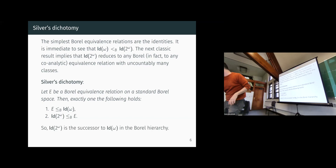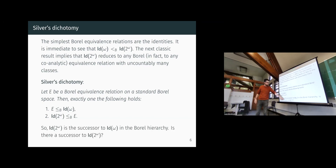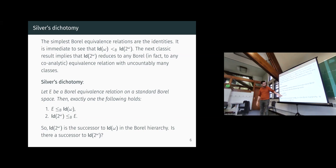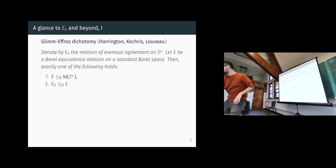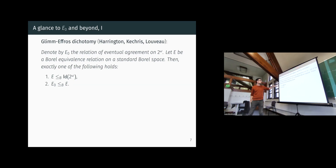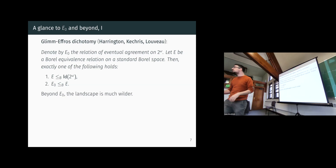So in the Borel hierarchy, the identity on Cantor space is just a successor in complexity of the identity on omega. Can there be a successor above it? A priori you would imagine not. But in fact there is — that's the content of the Glimmer-Effros dichotomy. Let e0 be the relation of eventual agreement on Cantor space: two elements are equivalent if there is a cutoff beyond which they are exactly the same. Then e0 is the successor of the identity on Cantor space. Whatever Borel equivalence relation you consider, it is either below the identity on Cantor space — these are called smooth equivalence relations — or e0 Borel-reduces into it.